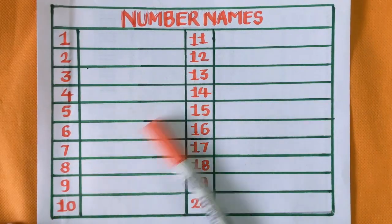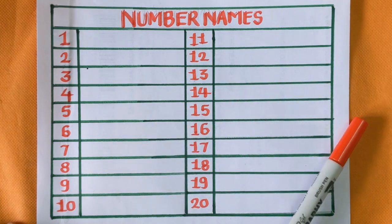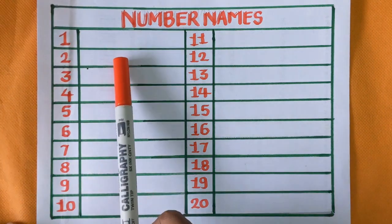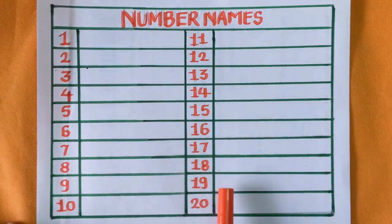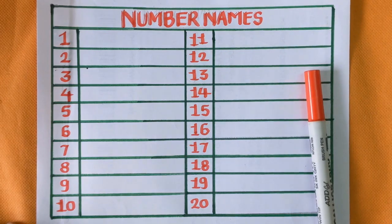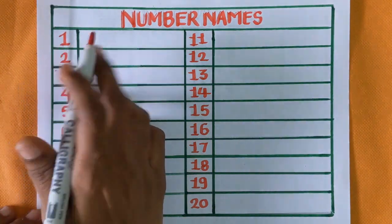Hey hello kids, welcome back to my channel Learn with Oviya. Today we are going to learn how to write 1 to 20 number names with a red color, so let's get started. At first, number one.